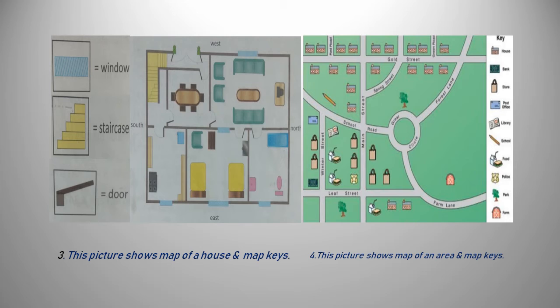This picture shows a map of an area. Is map mein bahut sari jagahon ko dikhaya gaya hai, aur inko pehchanne ke liye keys bhi di gai hain. Jinki madad se hum yeh jaan sakti hain ke school ka exact place aur direction kya hai, ya hospital aur park kis direction mein, kis location mein waaqe hain. Many places you can see in this picture; their keys are given to recognize them. Through the keys, we can know the direction and exact location of the school and other places.